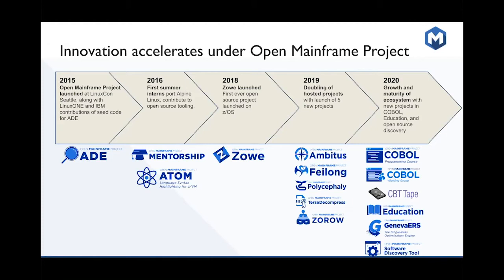One is the mentorship program forming in 2016, which has brought lots of new open source to the platform. Alpine Linux was ported by one of our first mentees. We've also seen big contributions to OpenStack, Cloud Foundry, Kubernetes, Hyperledger, and a number of other open source projects. It also brought focus to the ZOS community with the launch of Zoe two years ago — really the first ever open source project launched on the ZOS platform. In 2019 we launched five new projects; so far in 2020 we've launched six, with several more in the wings.